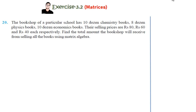Hello friends, welcome to my channel Math Alcoholic. This video is the concluding video of exercise 3.2 where I'll be discussing the last three questions, which are pretty easy. Question number 20: the bookshop of a particular school has 10 dozen chemistry books, 8 dozen physics books, and 10 dozen economics books. Their selling prices are rupees 80, rupees 60, and rupees 40 each respectively. Find the total amount the bookshop will receive from selling all the books using matrix algebra.